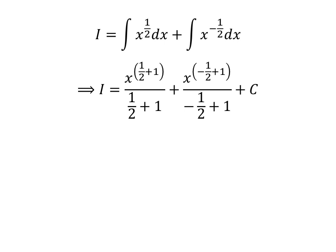Capital C is the arbitrary constant of the indefinite integral — never forget to add this constant. Simplification gives us I is equal to x raised to the power of 3 upon 2, upon 3 upon 2, plus x raised to the power of half upon half, plus capital C.